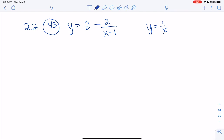Alright, here's 45 and 2. So we're going to start with y equals 1 over x, which looks like this.